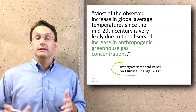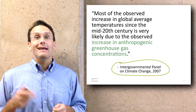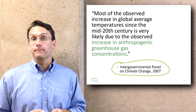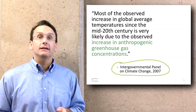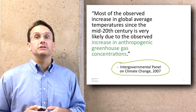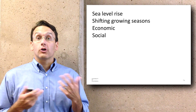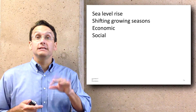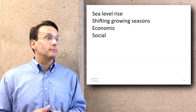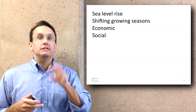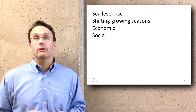There's a group of hundreds of scientists from around the world called the Intergovernmental Panel on Climate Change. In 2007, this group put out a report stating that most of the observed increase in global average temperatures since the mid-20th century is very likely due to the observed increase in anthropogenic greenhouse gas concentrations. These temperature changes are also leading to other environmental outcomes, like shifting sea levels, shifting growing seasons — plants growing in different areas and ripening at different times — which then lead to economic transformations and potentially social upheaval.